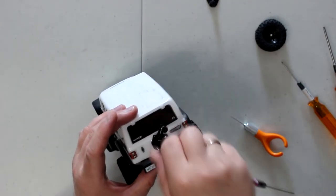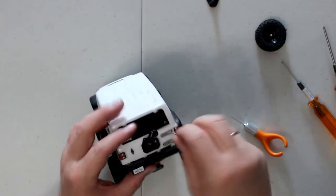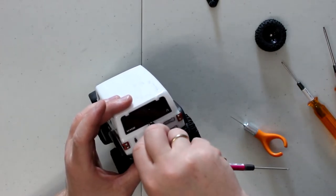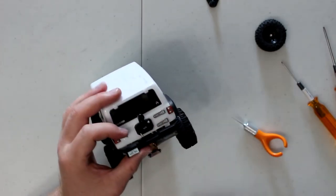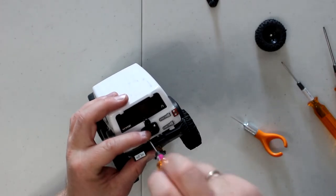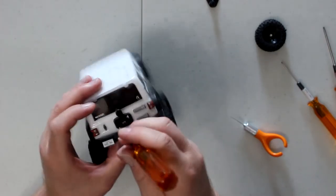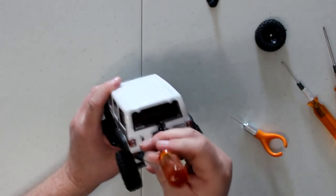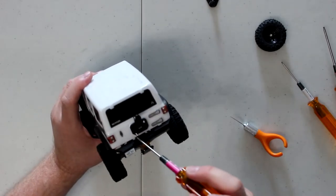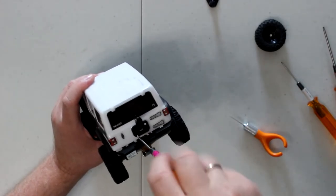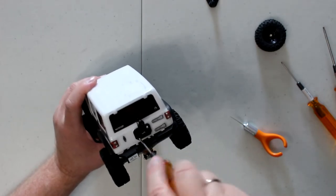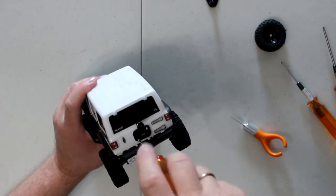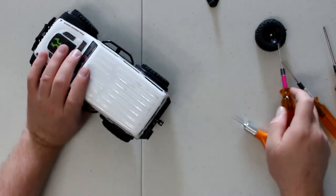Now you'll notice these are very long screws. I didn't have any other ones when I did this, and I prefer to have it a little bit longer. That way I know it's not going to strip out of the plastic. Because these guys are just holding plastic on plastic. And the RC4WD wheel has a little bit of weight to it.